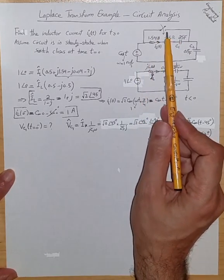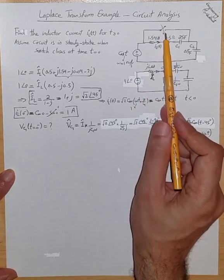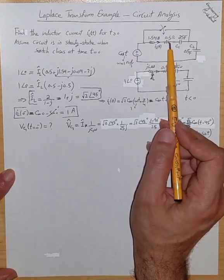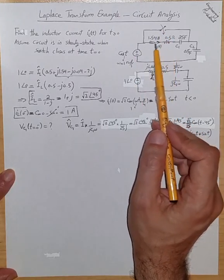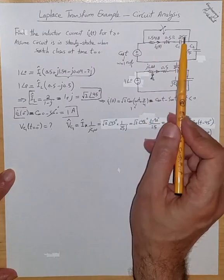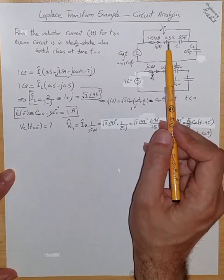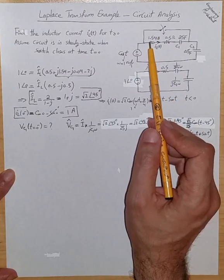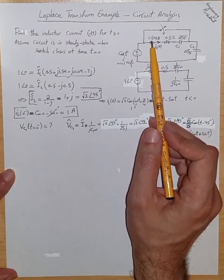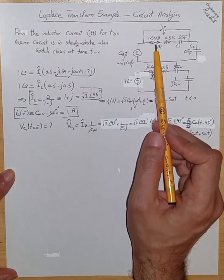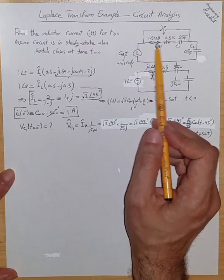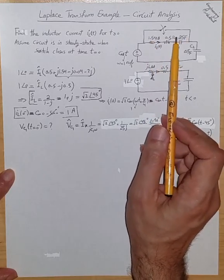You would expect that at time infinity, after the closure of the circuit, because of the existence of the resistor, the electrical energy is dissipated through thermal dissipation and the current would eventually go to zero. So that is the expectation for the final inductor current at time infinity after the closure of the switch.